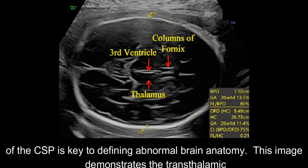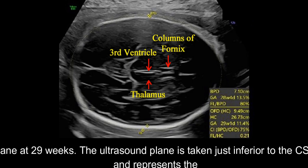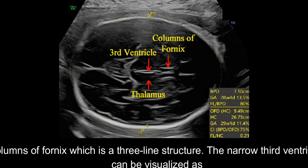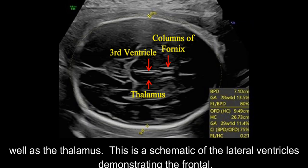This image demonstrates the transphalamic plane at 29 weeks. The ultrasound plane is taken just inferior to the CSP and represents the columns of fornix, which is a three-line structure. The narrow third ventricle can be visualized as well as the thalamus.